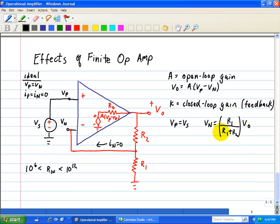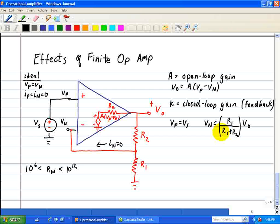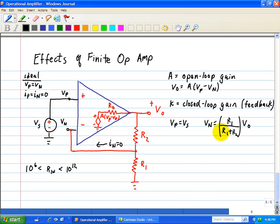Now we determine the output voltage in terms of the controlled source voltage, where we use voltage division on the series connection of the three resistors RO, R2, and R1. So therefore VO is simply equal to R1 plus R2 all over the sum of those resistances RO plus R1 plus R2 times A times (VP minus VN) as shown here.